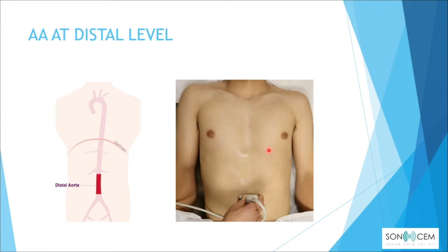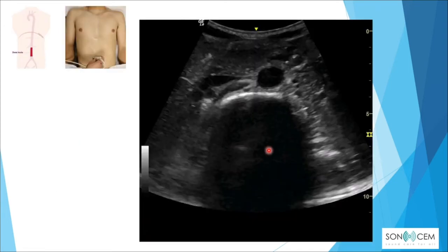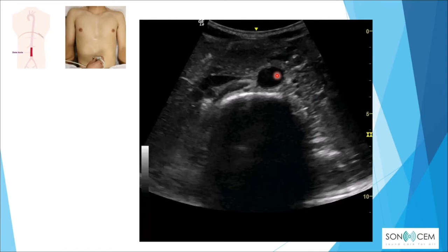Moving more caudally to the distal level, just above the umbilicus level, the aorta will appear more superficial due to the curvature of the spine. To get a proper aorta view, we need to zoom in. For measurement, decrease the depth further to get an accurate reading.